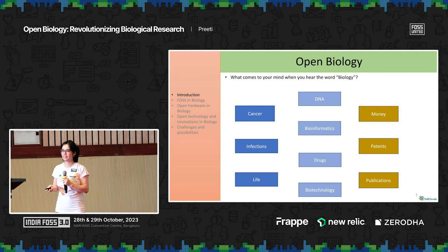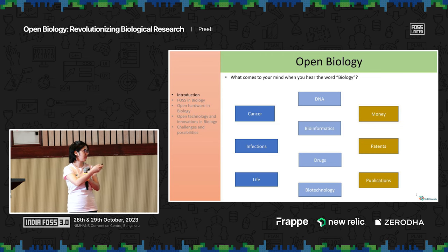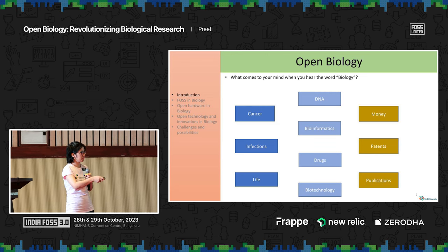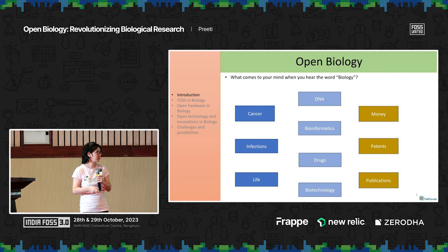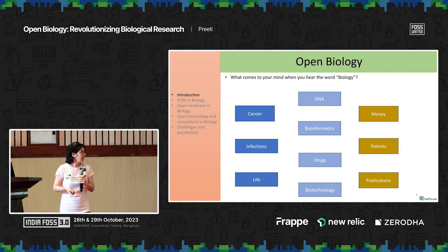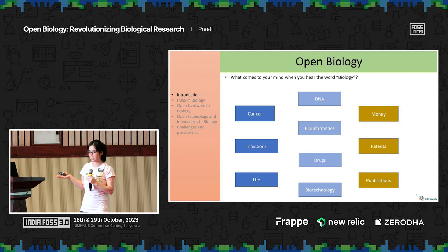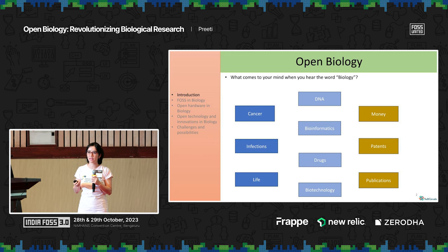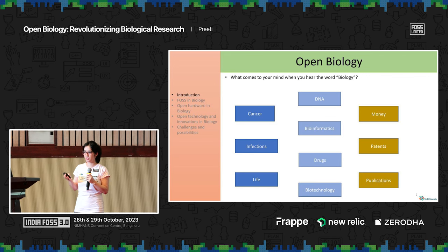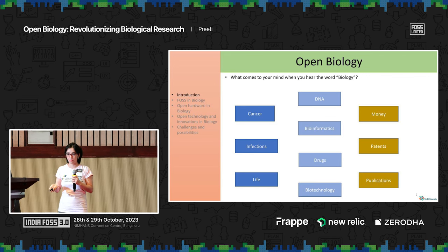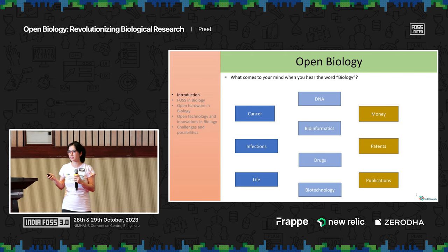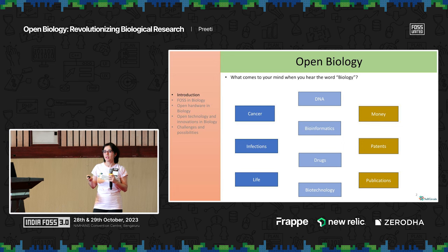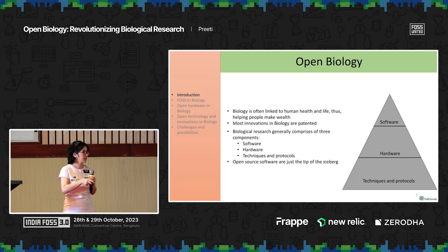You guys definitely know a lot deeper about biology. But biology also refers to money, patents, and publications. It's often linked to health and life, and that is why it's also related to the wealth that people make by having a lot of patents, because most biological innovations are patented. Biological research generally has three components — if you consider the pyramid structure, then the tip is the software.